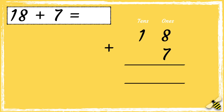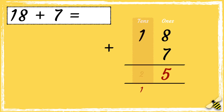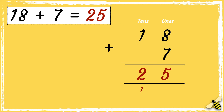So now our column addition is set up. Remember we start from the right hand side, so we'll start with the ones. Eight add seven equals fifteen. We carry the ten below in the tens column. Now we need to add the digits in the tens column, not forgetting the ten we carried over. One add one equals two, so we have two tens and five ones, so the answer is 25.